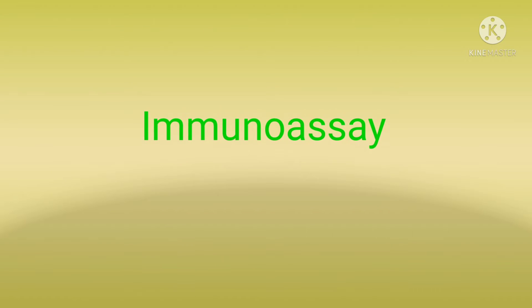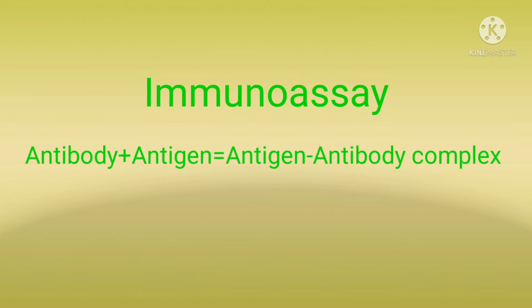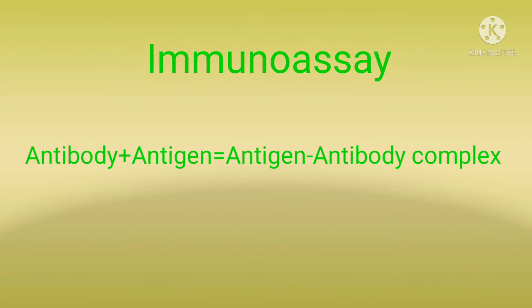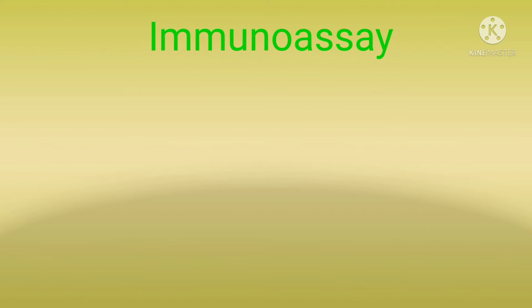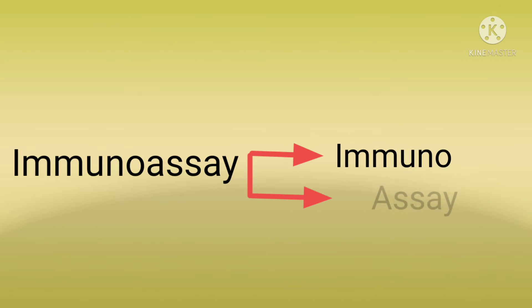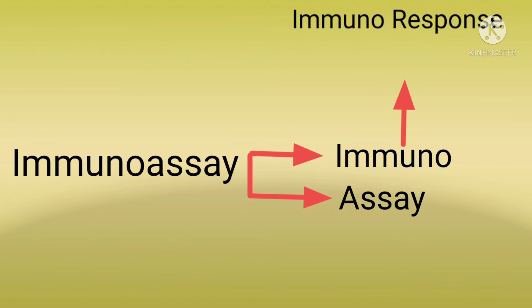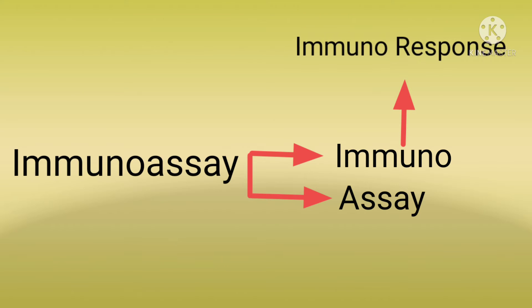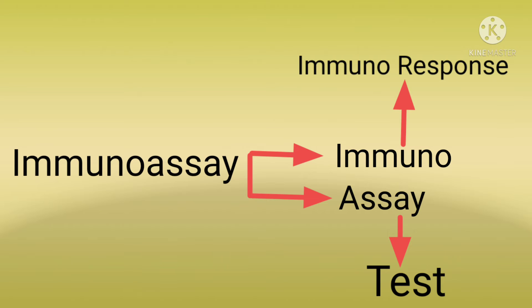The first one is immunoassay. An immunoassay is a test that uses antibody and antigen. If we split this word — immunoassay — we get 'immuno' and 'assay'. Immuno refers to an immune response that causes the body to generate antibodies, and assay refers to a test. That means immunoassay is a test that utilizes immunocomplexing when antibodies and antigens are brought together.